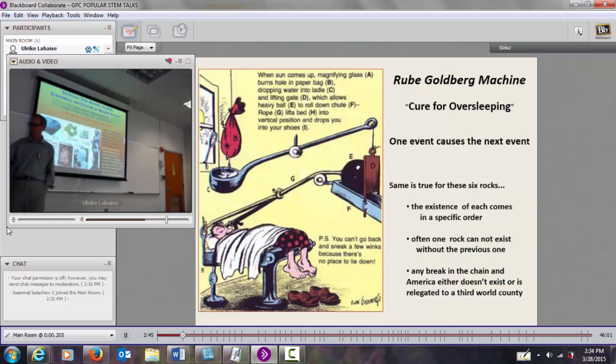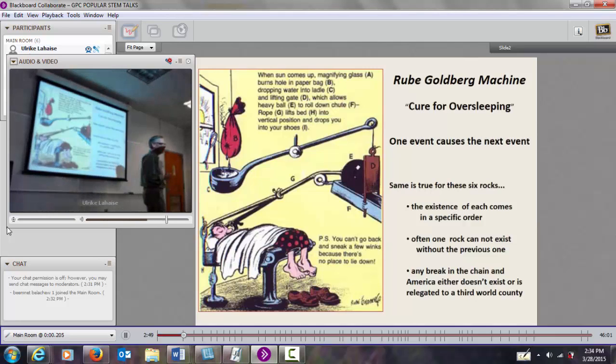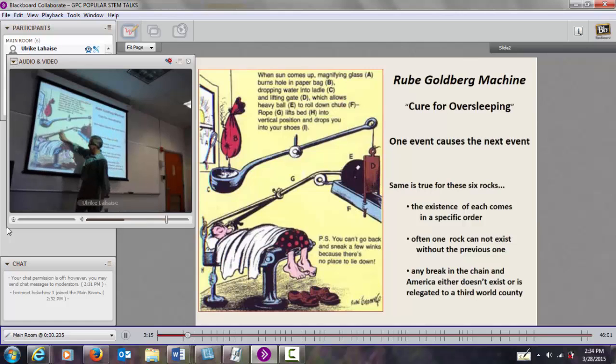The first rock is peridotite, but we need to explain why we have to do them in order. It's kind of like a Rube Goldberg machine. Here's his cure for oversleeping: Sunlight comes up, goes through a magnifying glass, puts a hole in the sandbag. The sand goes in, lifts the gate, the bowling ball rolls down, pulls him up and he drops into his shoes. Just like this Rube Goldberg thing, it's true for the same six rocks. The existence of each one comes in a specific order. If one rock cannot exist without the previous one, we break the chain and America doesn't exist.